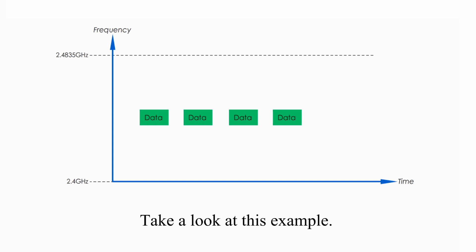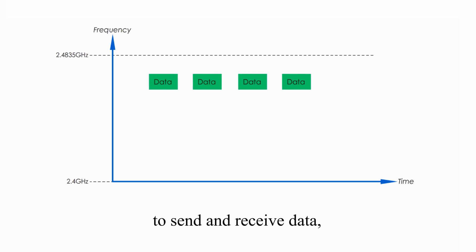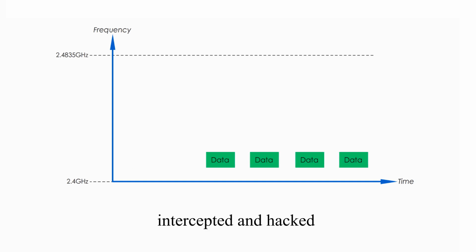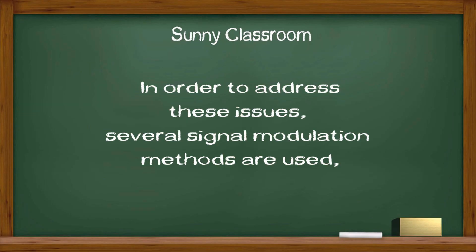Take a look at this example. Suppose we use the whole 2.4 GHz band to send and receive data. And we can say this data could be easily intercepted and hacked because they travel through one channel constantly.